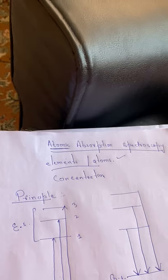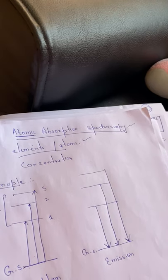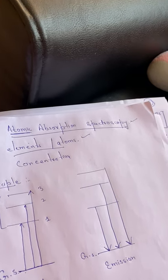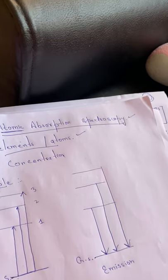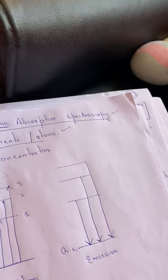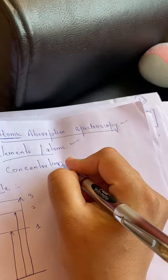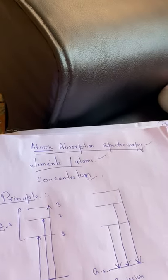But in this branch of spectroscopy, what we study is which elements or atoms are present in a particular sample. Suppose you are provided with a sample and you carry out this particular type of study. The information you will get from it is which atoms or which elements are present.